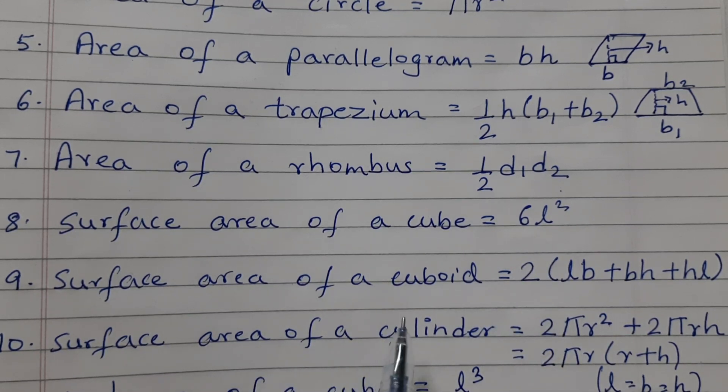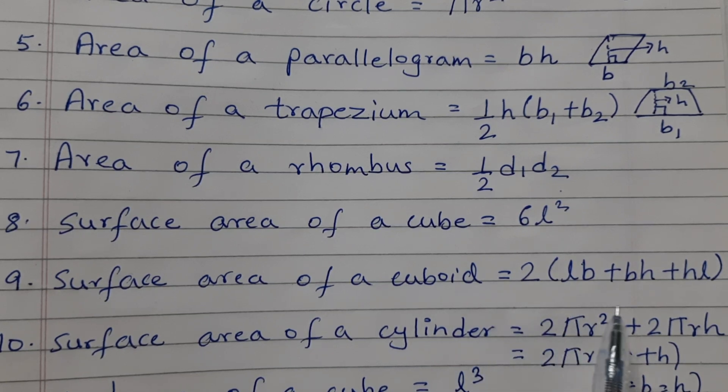Surface area of a cuboid is equal to 2 into length into breadth plus breadth into height plus height into length.